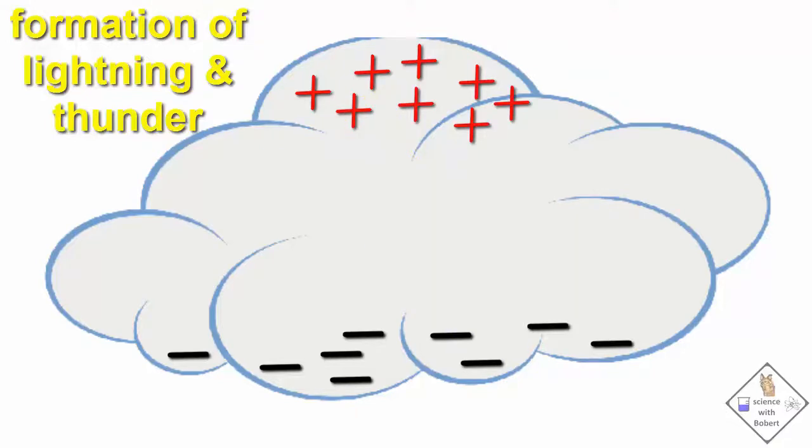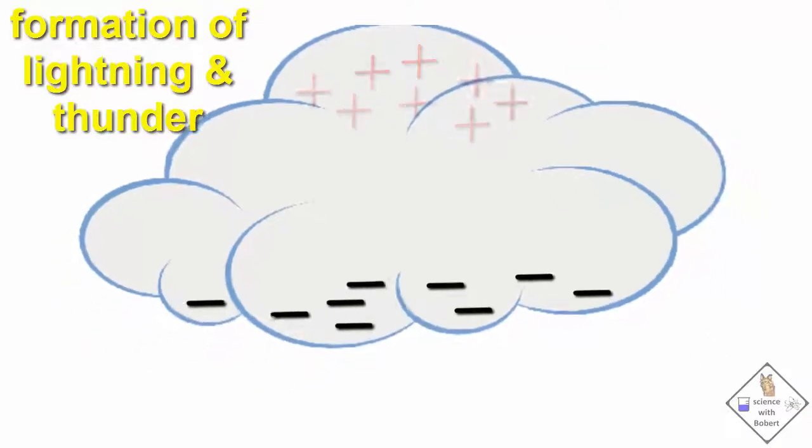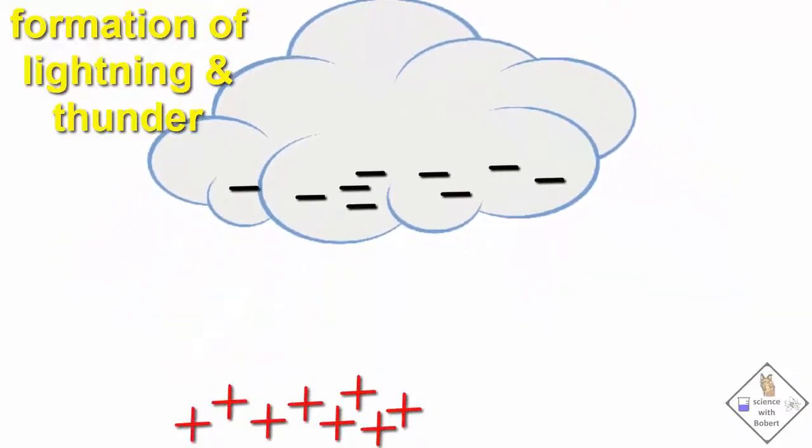Most lightning happens inside a cloud, but when a buildup of positive charge occurs on the ground beneath the cloud, lightning can occur between the cloud and the ground.